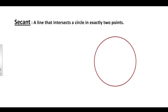Let's start with the definition of a secant. A secant is a line that intersects a circle in exactly two points. There's a lot of similarities between a secant and a chord. A chord was just a line segment that intersected a circle. A secant is really just the extension of that chord — a line that intersects a circle in exactly two points. So what a chord is to a line segment, a secant would be to a line.